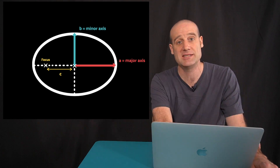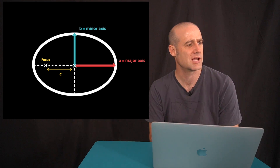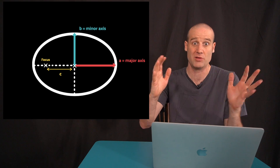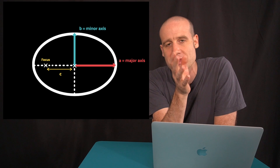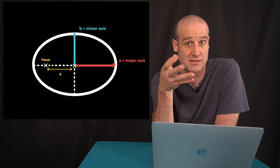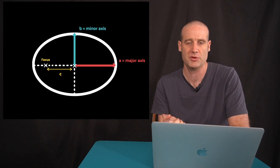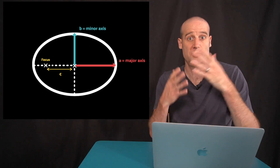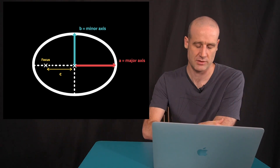B is the minor axis — or technically the semi-minor. I should be saying semi each time because technically the whole axis is the full diameter, whereas we're just using the radius equivalent. B is the semi-minor axis, A is the major — semi-major — axis, it's the big one, and C is how far out the focal point is. When you see A, B, and C during this video, that's what they're referring to.